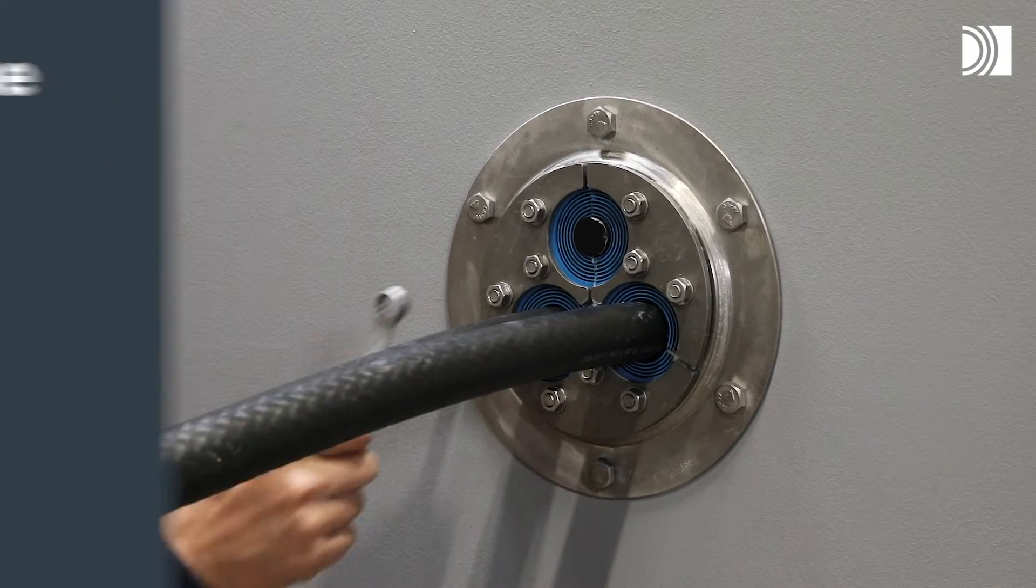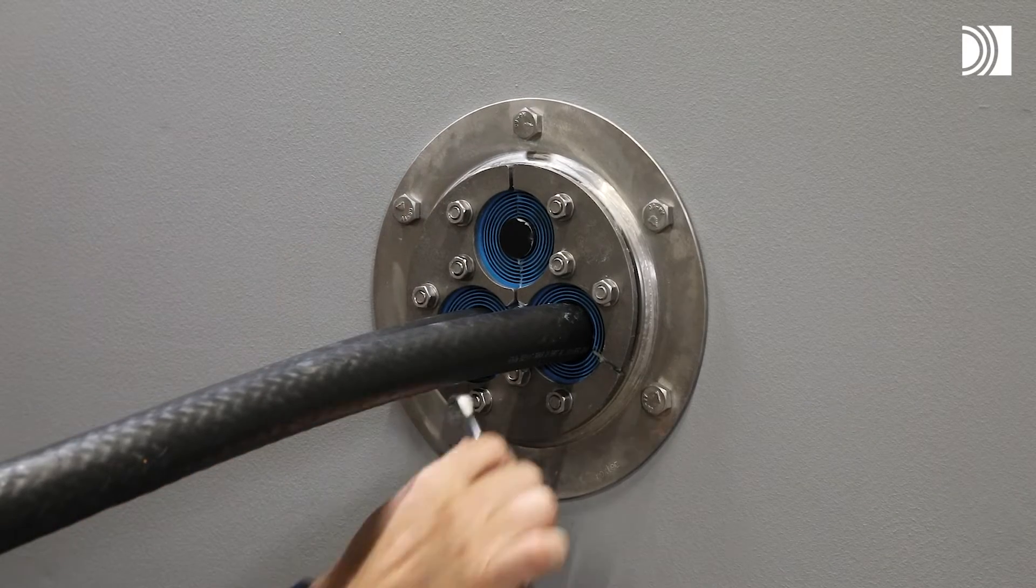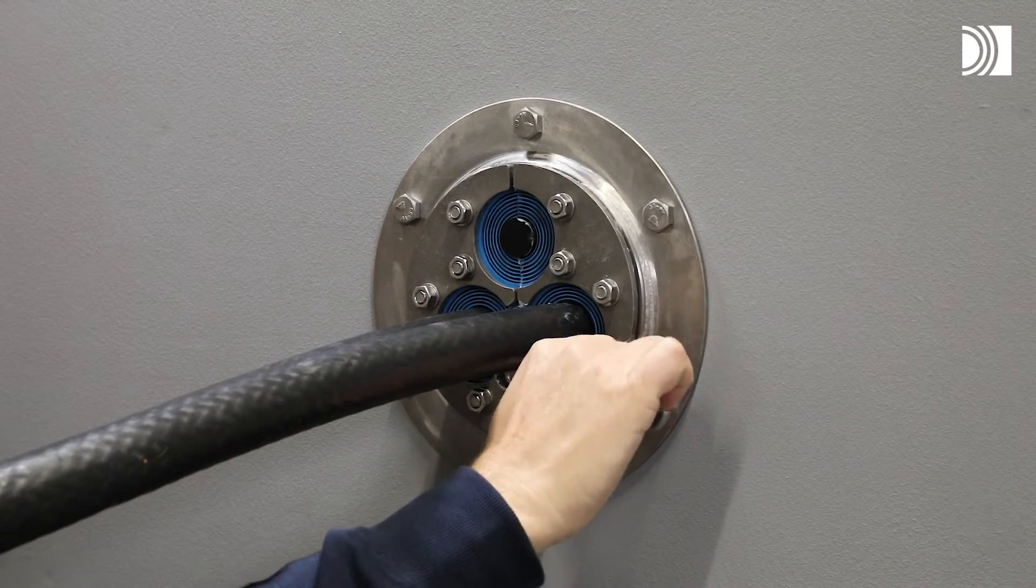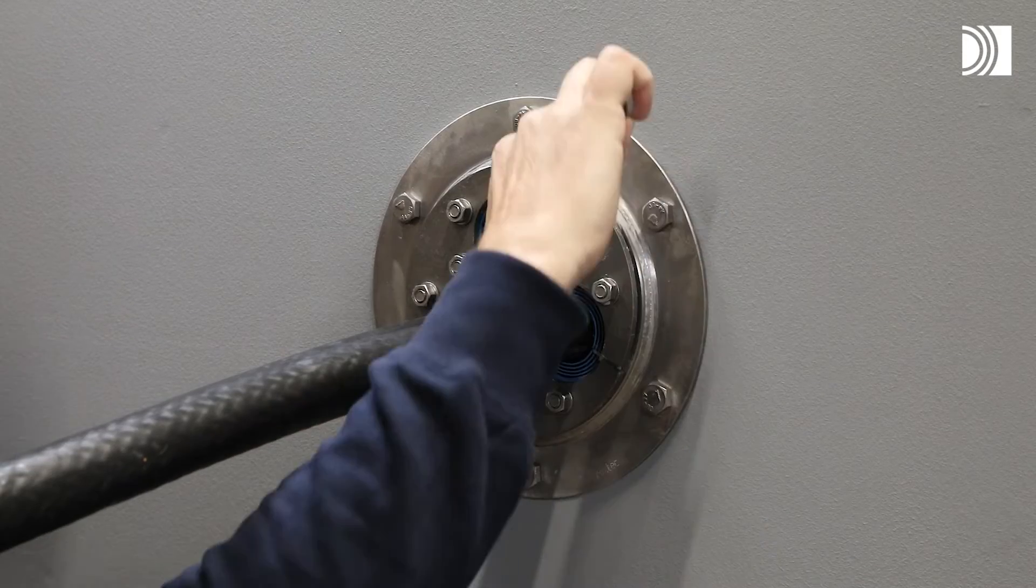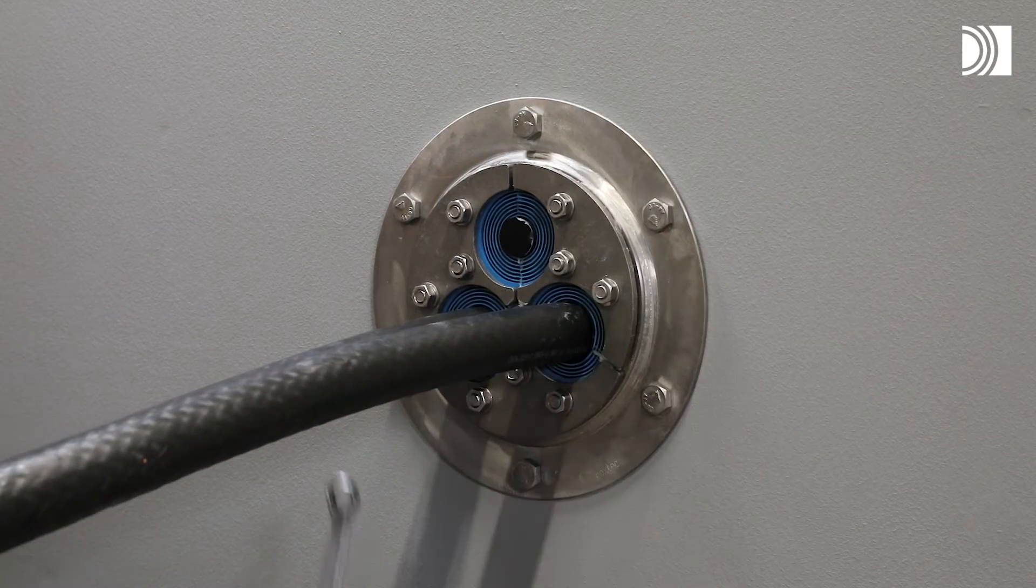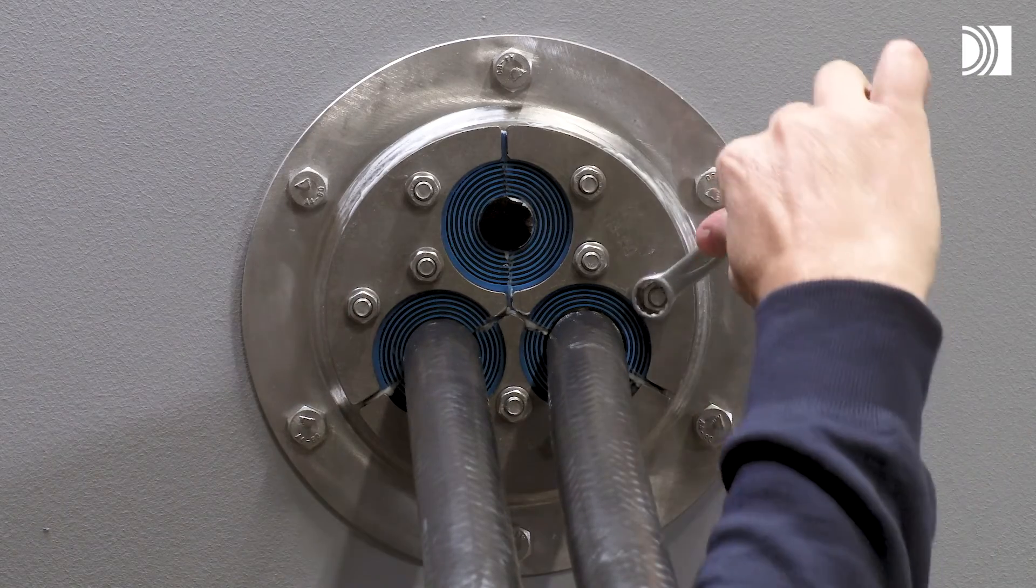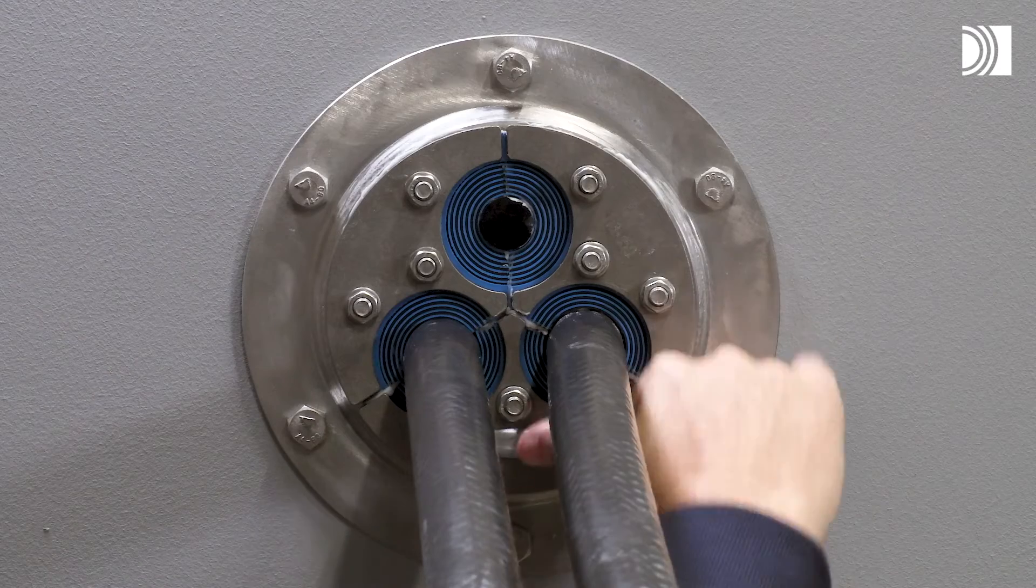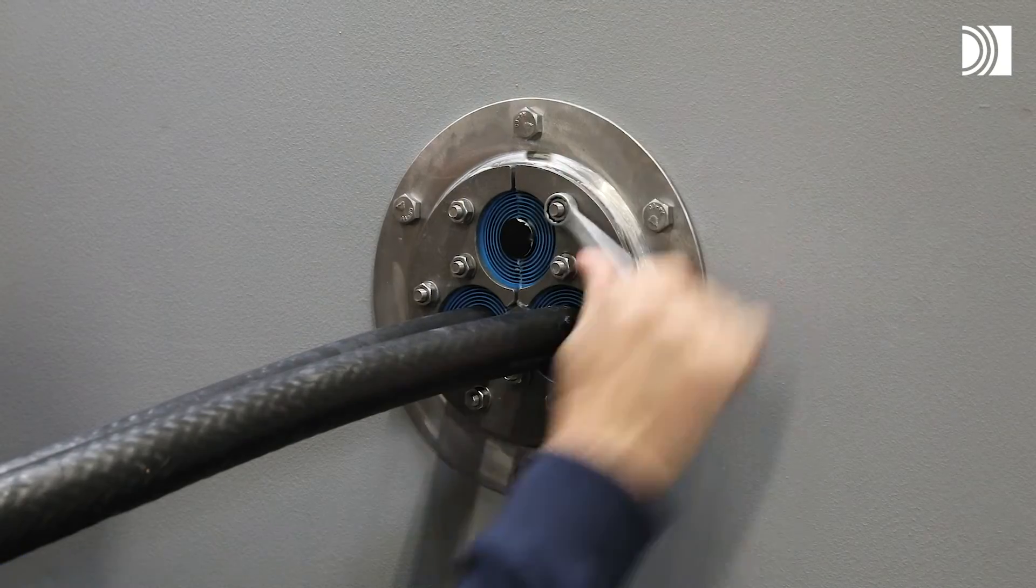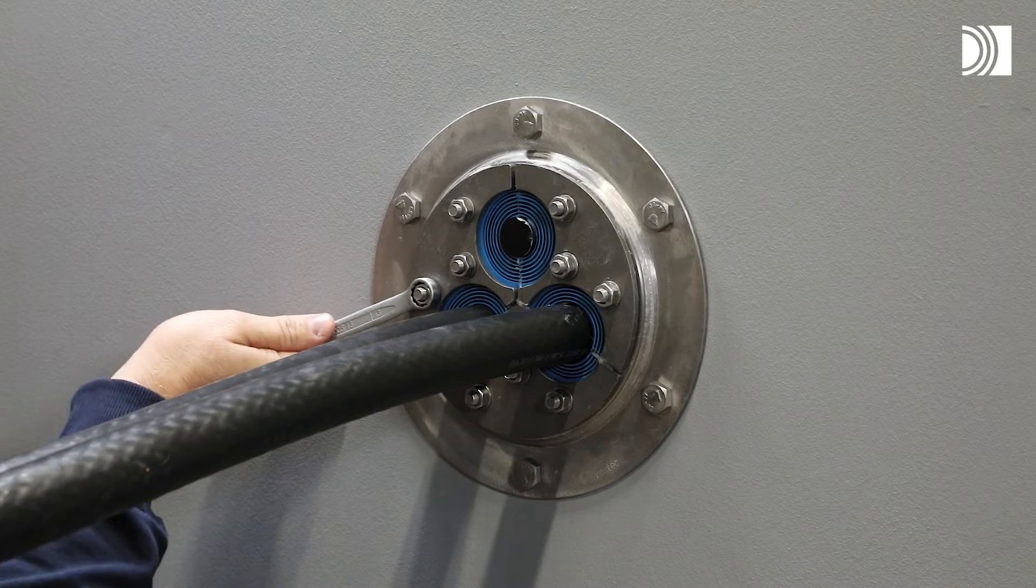Tighten the seal. Tighten the nuts crosswise in small steps. Tighten the inner nuts partially. Tighten the outer nuts partially and then continue with the inner nuts. Bulging rubber and visible protruding lubricant indicate a tight seal.